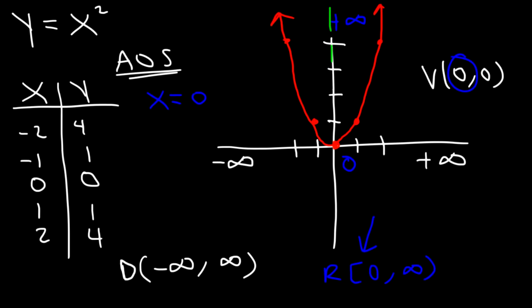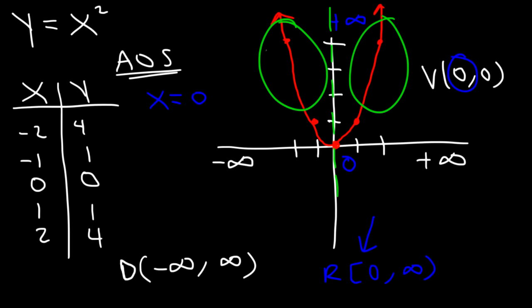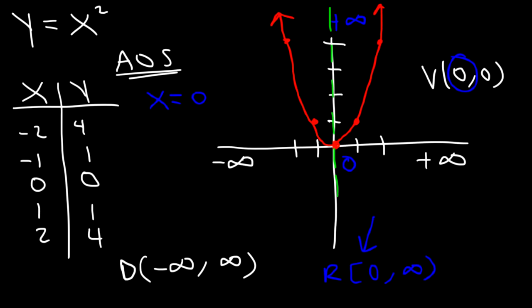If you draw the axis of symmetry, notice that the right side is symmetric across that line. Now any time a graph opens upward, it has a minimum value. The minimum value is basically the y-coordinate of the vertex. The lowest y value is 0.